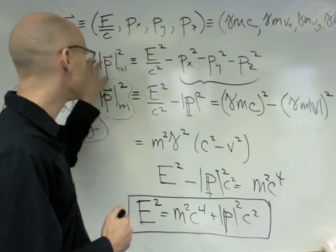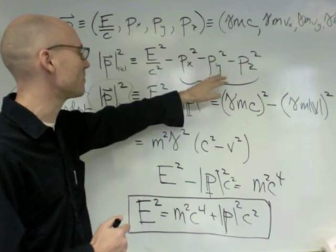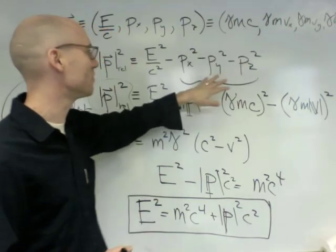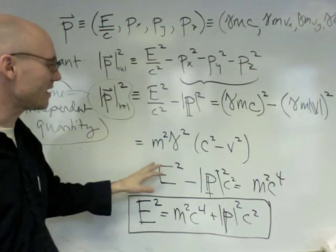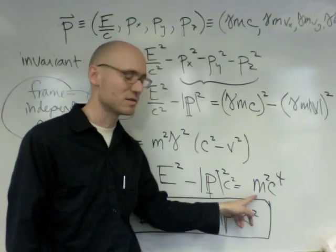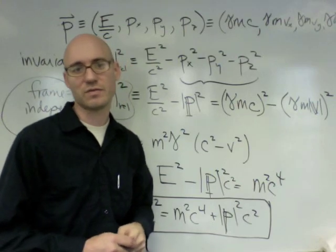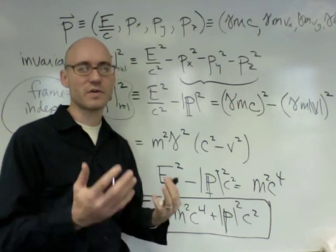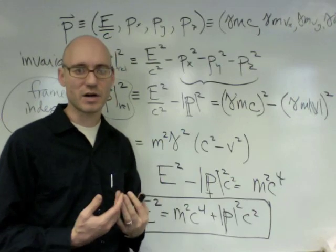And they combine the invariant you would create out of them if you postulate that these are the components of a four vector. The invariant you create out of them is, in fact, something that looks like it should be an invariant, something that doesn't depend on the speed of the reference frame. So this is a very suggestive argument.